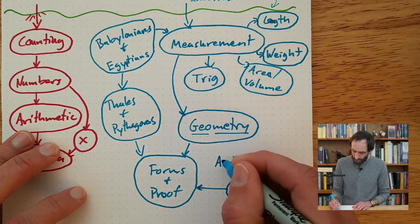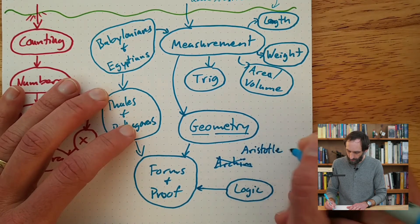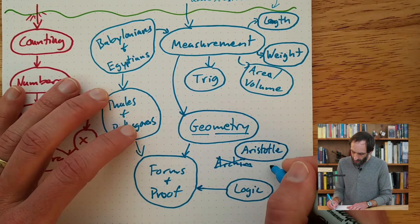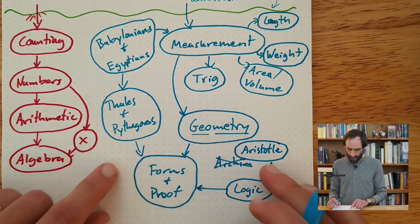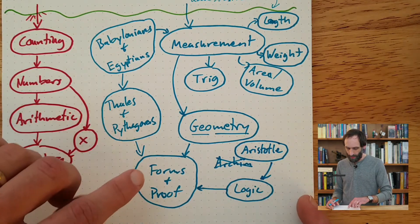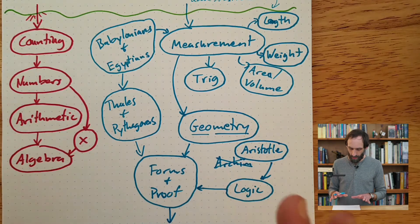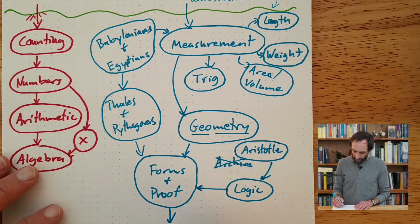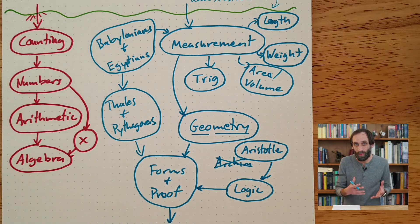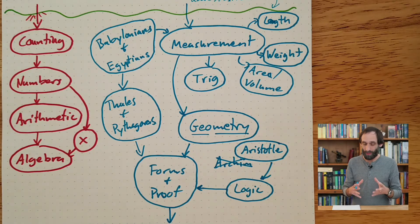So with the ancient Greeks, we have the study of forms and proof and the study of logic. As more and more proofs piled up, what was lacking was a good structure to put them into. The next big leap forward in geometry was taking all those proofs — all those facts verified using logic — and building a coherent structure around them. This is where we get the concept of axiomatic systems.